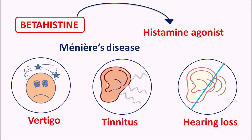But betahistine not only acts as an agonist — it can also act as an antagonist on H3 receptors. Today in this video we are going to discuss how betahistine acts, what is the mechanism of action, what is its chemical nature, what are the important precautions, side effects, and dosage.